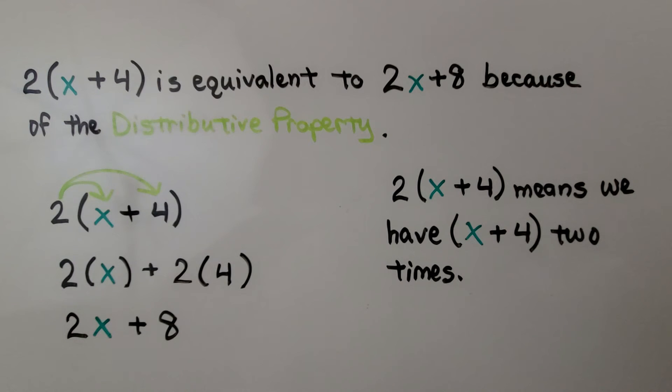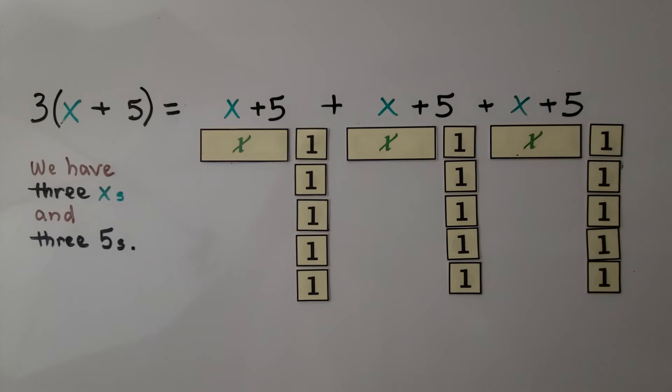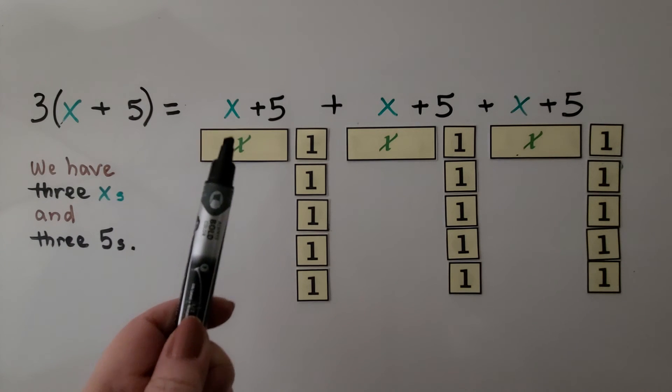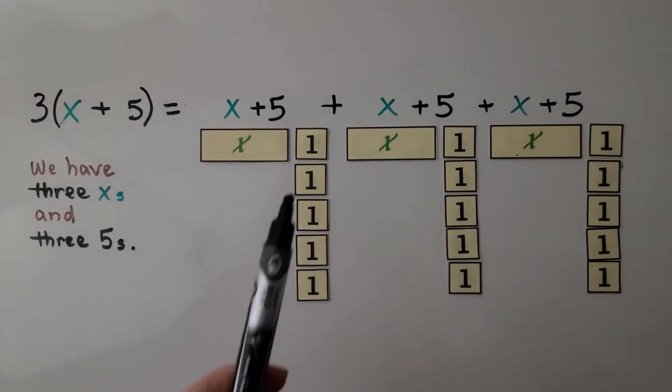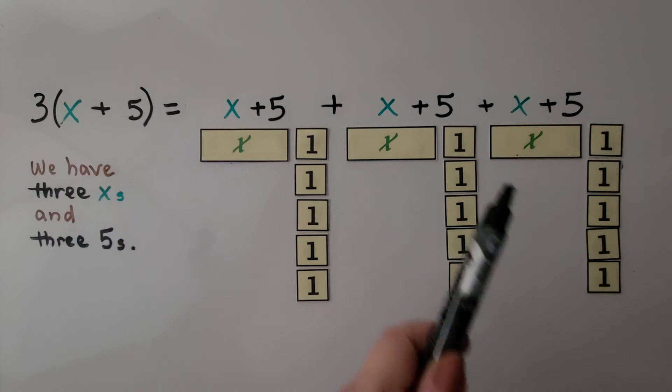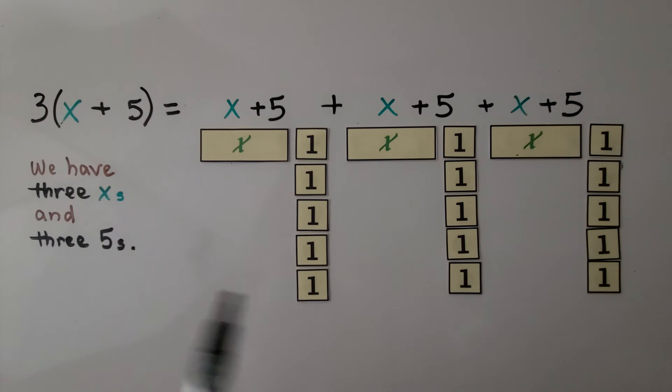2(x + 4) means we have x plus four two times. Here we have 3(x + 5). We have x plus five and another x plus five and another x plus five. We have three of them.